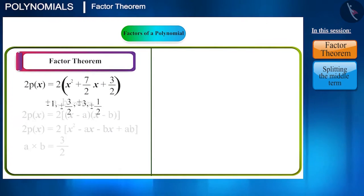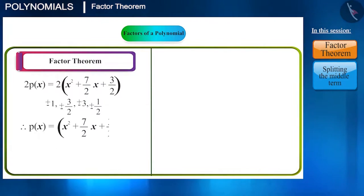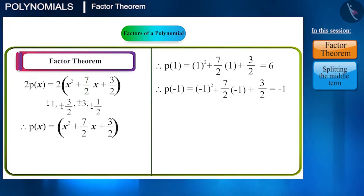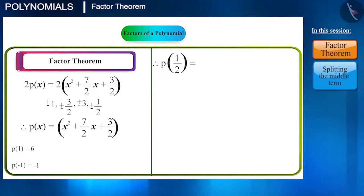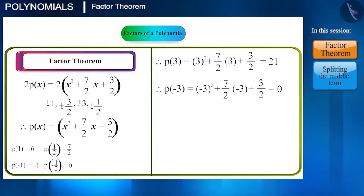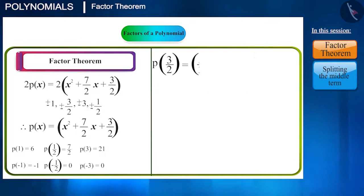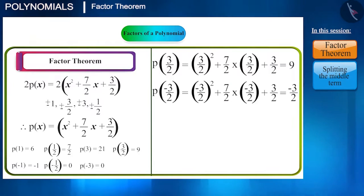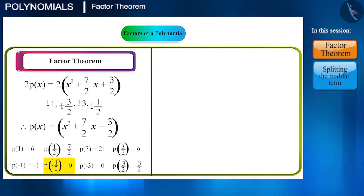Now, substituting all these values in the polynomial, we have to find which of these will make the value of the polynomial 0. P(-1/2) will be 0, and P(-3) will be 0. We get the values of A and B.